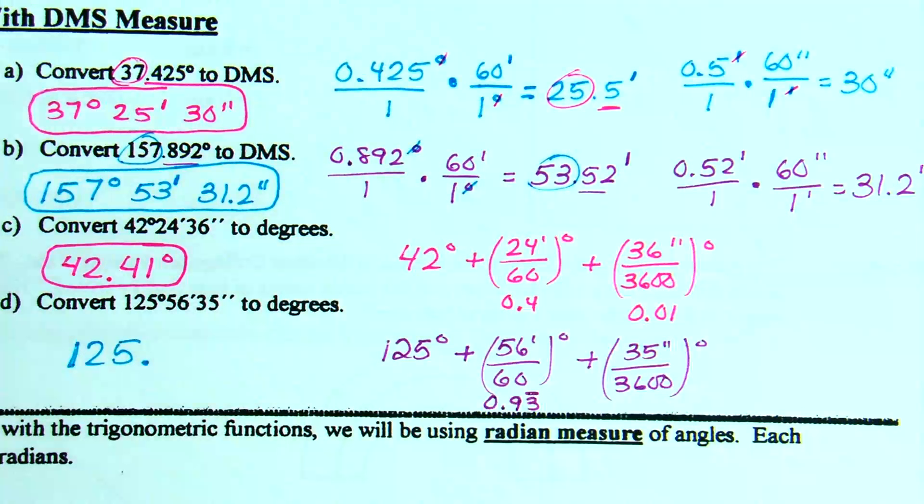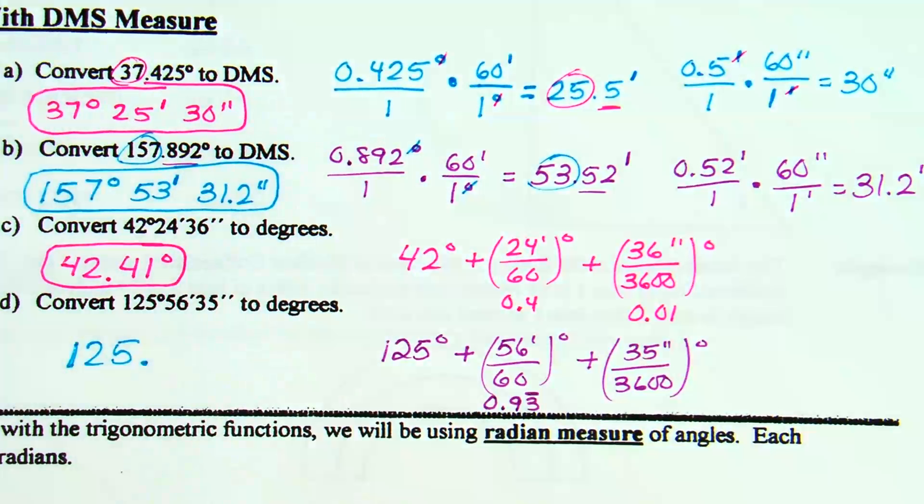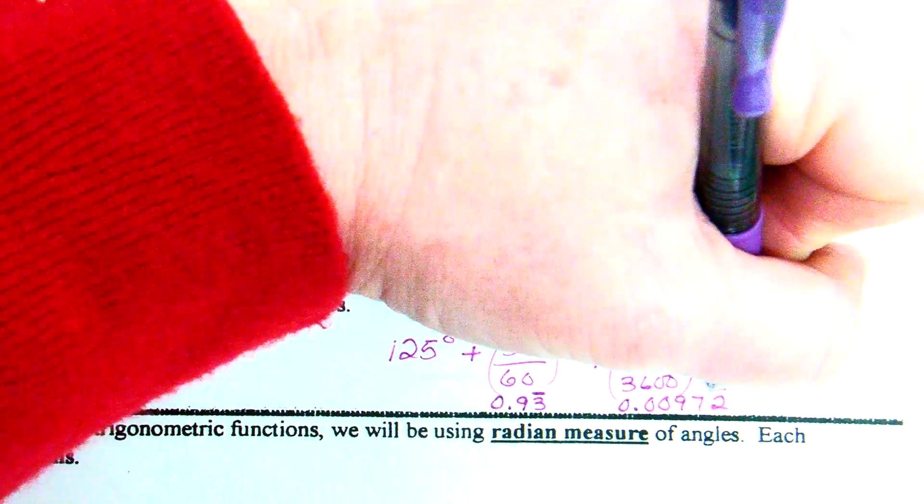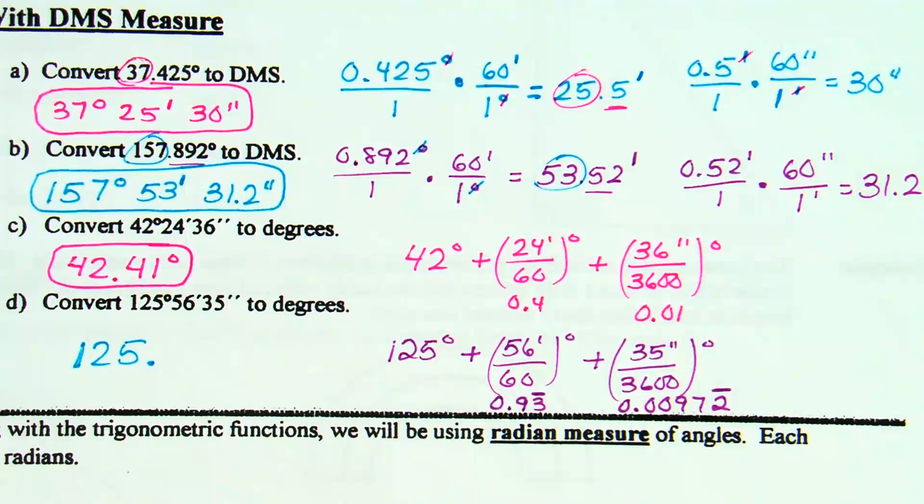So we know it's 125 degrees, plus, what's the next part you have to do? The 56 minutes divided by 60. And what else do you have to do? The 35 seconds divided by 60 squared, or 3,600. Now, this one's a little harder to do the individual pieces. You still kind of need the calculator, probably. Because what is 56 divided by 60? Point nine, three, and the three's repeating. And you don't want to just round that to point nine, three. That could affect your answer. What is 35 divided by 3,600?